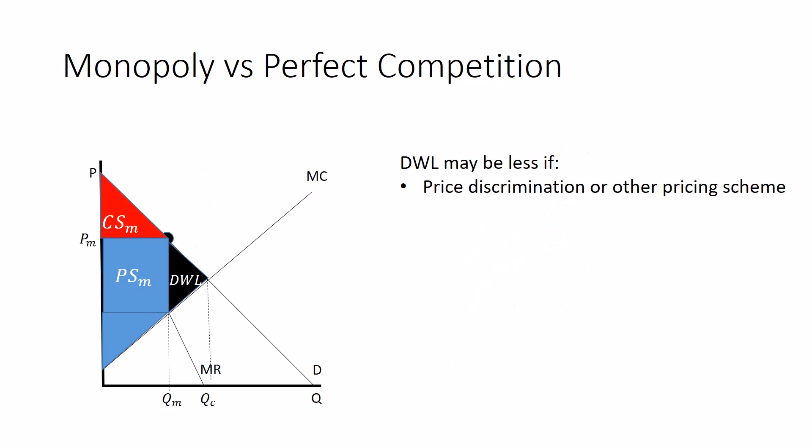Those are schemes where the monopolist can sell more units of the good. And by selling different prices, still manage to extract even more money from consumers. So those usually end with the monopolist getting tons of profit, but with more transactions. The market becomes more efficient.